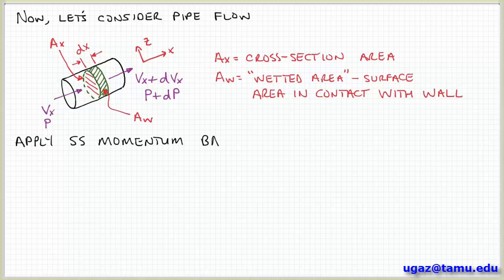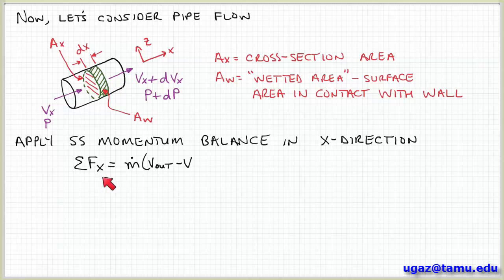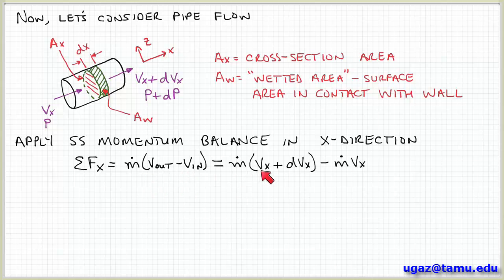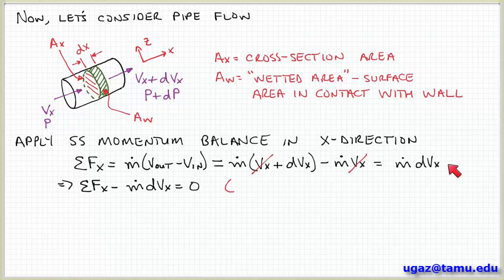Okay, so let's apply our momentum balance to this system in the X direction, the direction of flow along the axis of the pipe. So we get the sum of the forces, the X component of the sum of the forces is equal to M dot times V out minus V in. So V out is VX plus DVX, and the velocity coming in is M dot VX. So you can see that these M dot VX terms cancel, and we get that the sum of the forces is equal to M dot the mass flow rate times DVX. Or we can rewrite it so that the sum of the forces in the X direction minus M dot DVX is equal to zero. So I'm going to call this equation star star just so I can refer to it later when we come back to it.